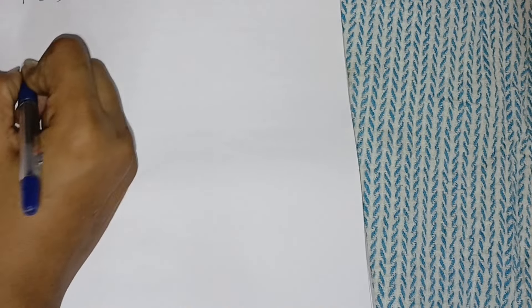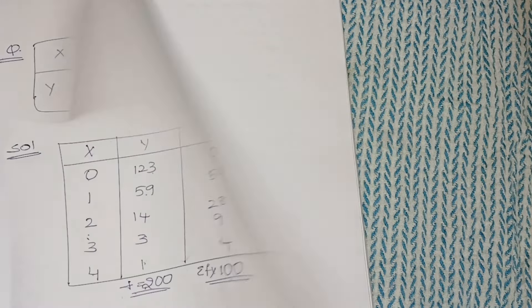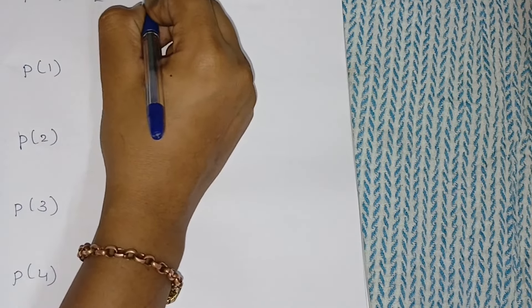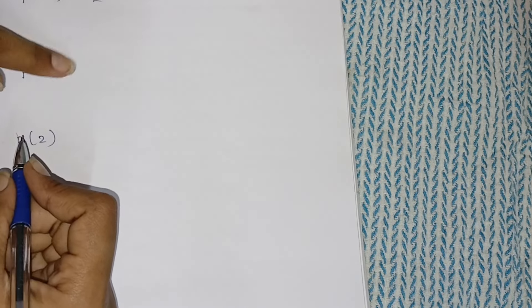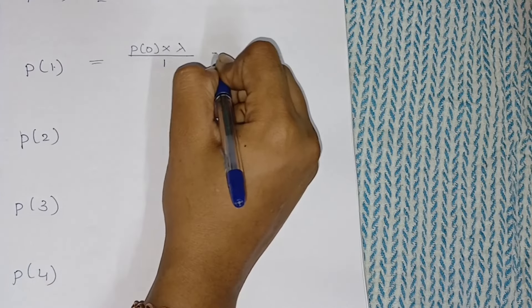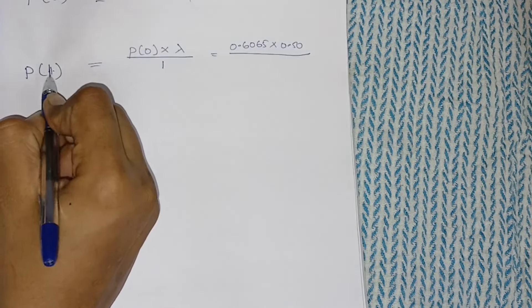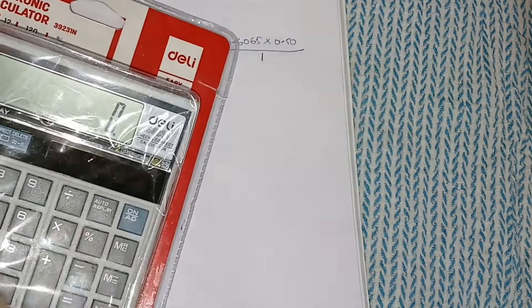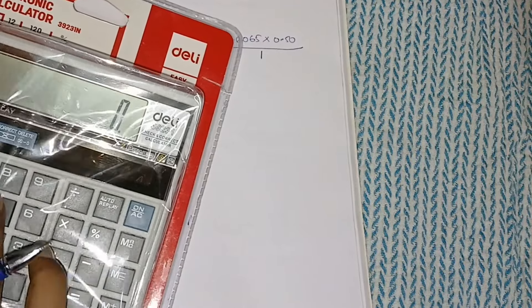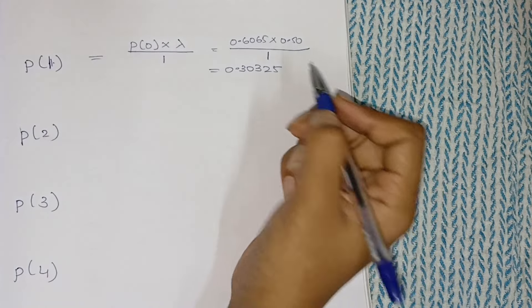In step 2, we calculate P(0), P(1), P(2), P(3), and P(4) for x values 0 through 4. For P(0), we simply take the e^(−m) value, which is 0.6065. For P(1), the formula is P(0) × lambda divided by 1, so 0.6065 × 0.50 ÷ 1 = 0.30325.